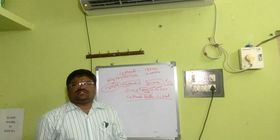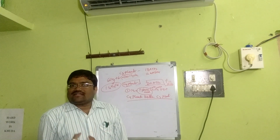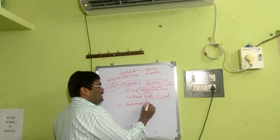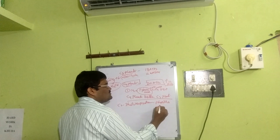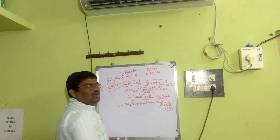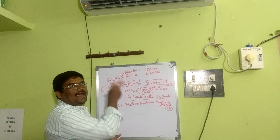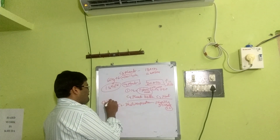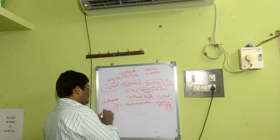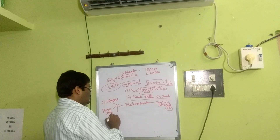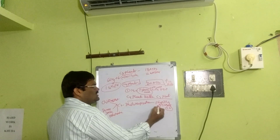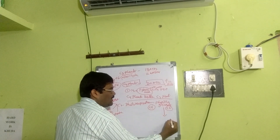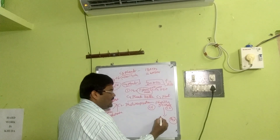Now discussing photorespiration — what makes it detrimental. Carbon dioxide is released through what we call photorespiration, also known as the C2 cycle. The first compound formed is phosphoglycolate, a 2-carbon compound. In the oxidized state, instead of PGA (3C), phosphoglycolate (2C) is formed. Photorespiration involves three organelles: first, the chloroplast; second, the peroxisomes; and third, the mitochondria. The phosphoglycolate formed in the chloroplast enters into the peroxisomes.